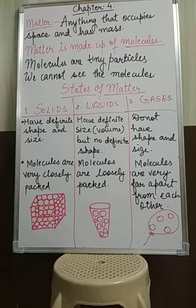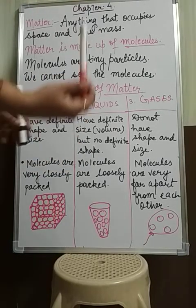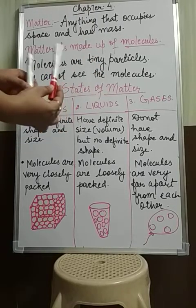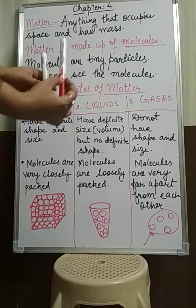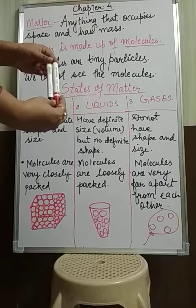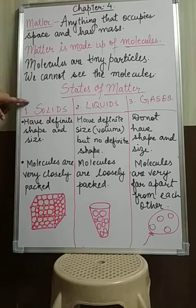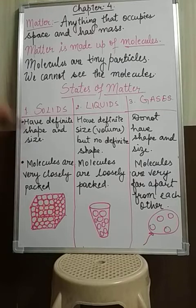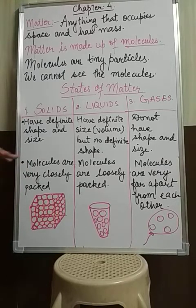For example, these two markers represent two molecules. If there is space between the two markers, that means they have intermolecular space. But if these two markers are placed close to each other, there is no space — and the same thing happens in solids. You can see the board: it is solid, and the molecules of this board do not have spaces between them. So the molecules are very closely packed, and the intermolecular space in solids is very less or negligible.